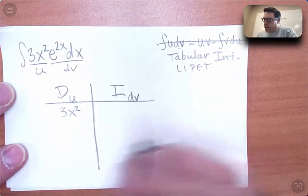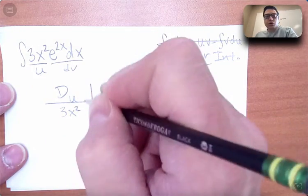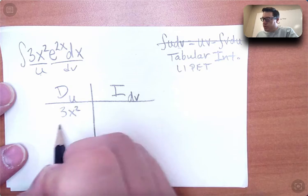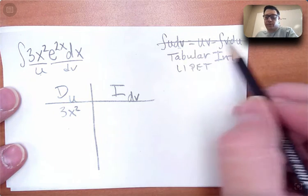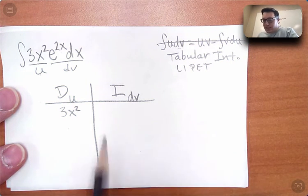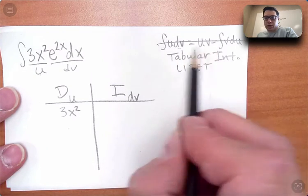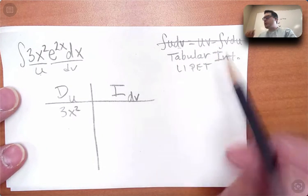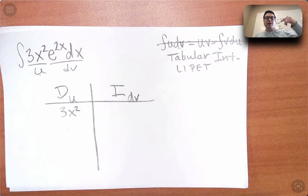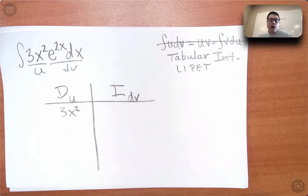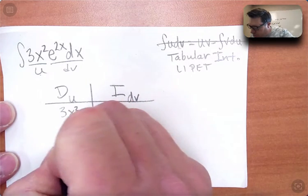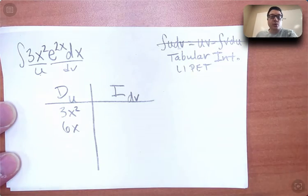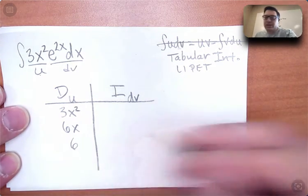So U is going to be 3x squared, and then working down with derivatives. So U, we need to know DU, just like we did over here, but instead of focusing on filling out the formula, now we're thinking about the structure the formula gives us. Derivative of 3x squared is 6x. Derivative of 6x is 6. Derivative of 6 is 0. That's when I know I can stop, because then you're going to have zeros forever.